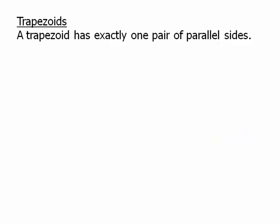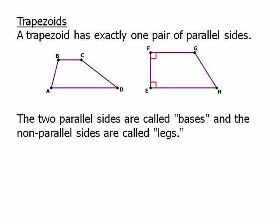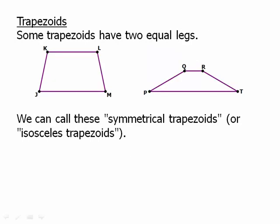Now we can talk about trapezoids. A trapezoid has exactly one pair of parallel sides. It is possible for a trapezoid to have two right angles on one of the legs. The two parallel sides are called bases, and the non-parallel sides are called legs. The two angles on a leg are always supplementary — so A plus B equals 180, and C plus D equals 180 — because of the basic properties of parallel lines.